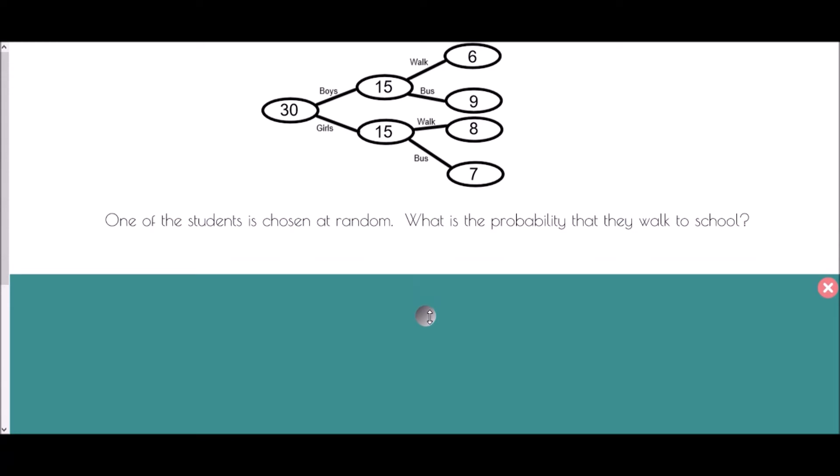And so the first one is one of the students is chosen at random. What is the probability that they walk to school? So the first thing to look at here just says one of the students. And so that means we are dealing with the original 30 people. All of them are a possibility. And so for our probability, it's going to be out of 30. What is the probability that they walk to school? That's the key here. How many students actually walk?